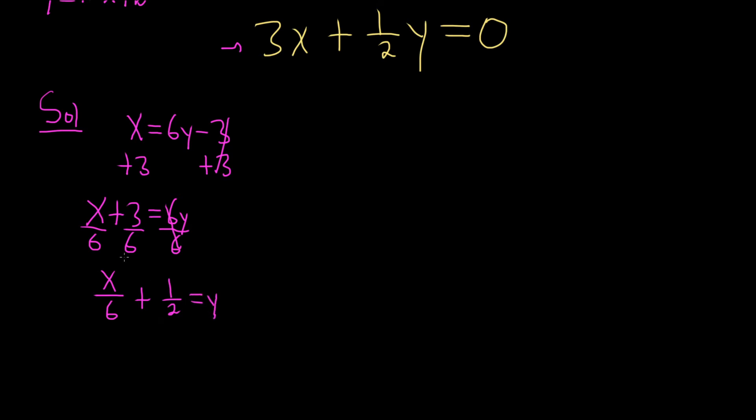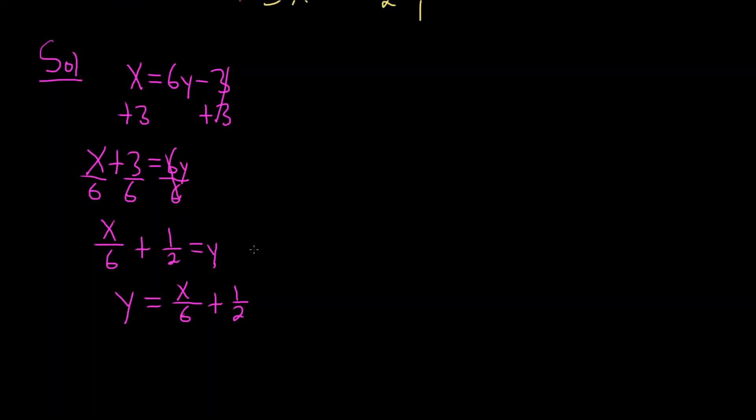Let's rewrite this and put the y on the left: y equals x over 6 plus 1 half. Now x over 6 can be written in a nicer way as 1 sixth x. So y equals 1 sixth x plus 1 half.